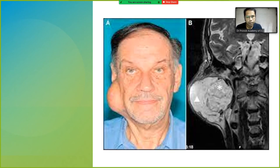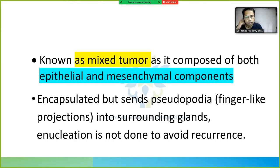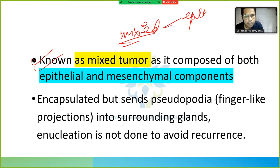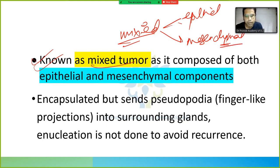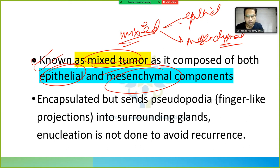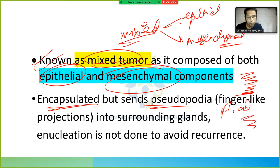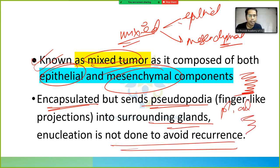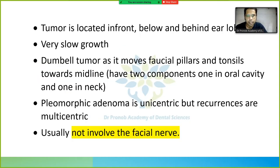Pleomorphic adenoma is also known as mixed tumor because it has both an epithelial component and a mesenchymal component. It is encapsulated but sends pseudopodia — finger-like projections — into surrounding glands. Enucleation is not done to avoid recurrence due to these pseudopodia.